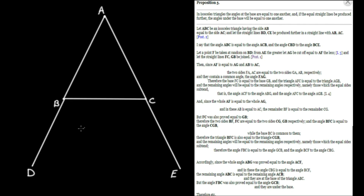Let a point F be taken at random on BD. From AE the greater, let AG be cut off equal to AF the less — we take the length of AF and cut that off from the line segment AE. We can do this by construction using Proposition 3, giving us point G. Then let the straight lines FC and GB be joined.